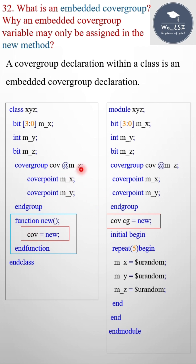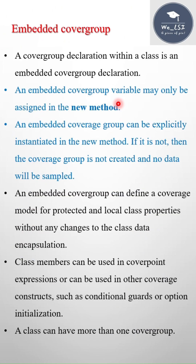This is simple SystemVerilog code. If you have UVM components, you need to construct the cover group inside the new method only — you cannot construct the cover group inside the build phase or any other method. An embedded cover group variable may only be assigned in the new method, and an embedded coverage group can be explicitly instantiated in the new method. If it is not done there, the coverage group is not created and no data will be sampled. These are the important points to remember about embedded cover groups.